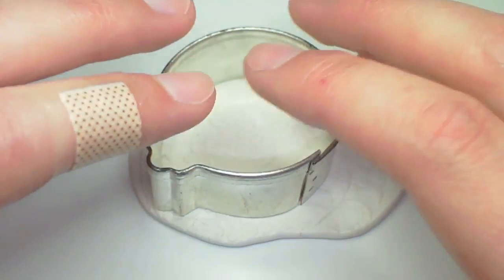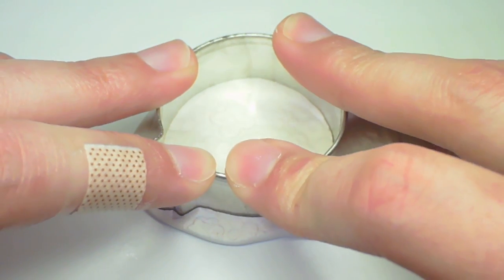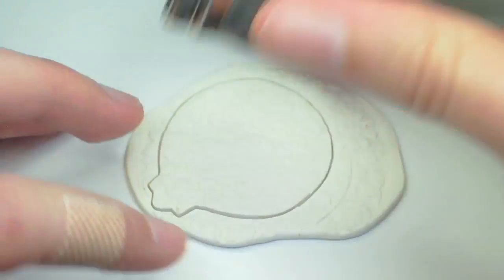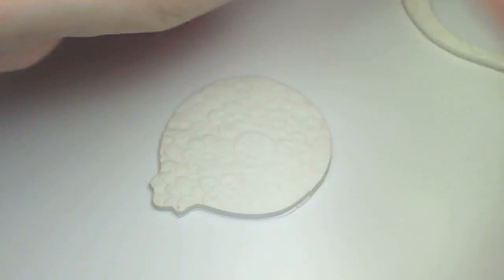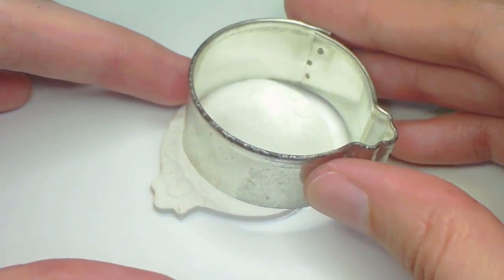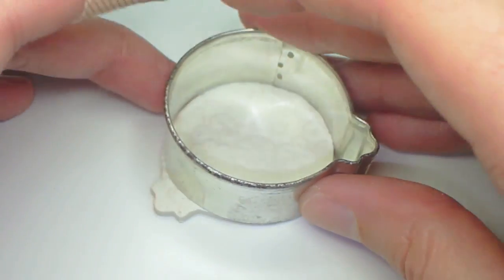And take your cookie cutter and cut out a shape. Mine wasn't perfectly round so I had to cut off the extra tidbits.